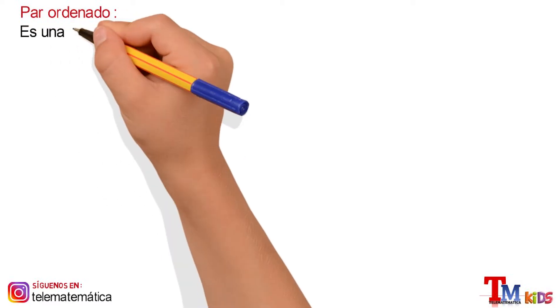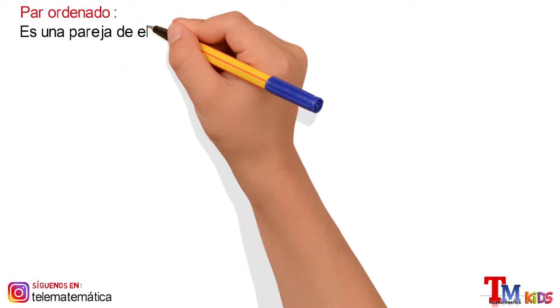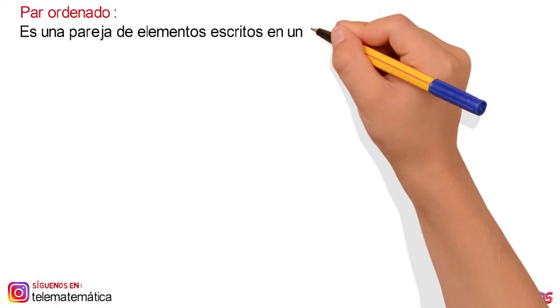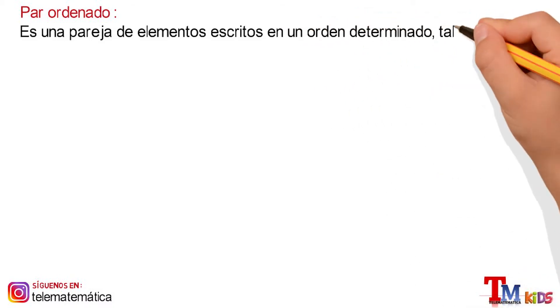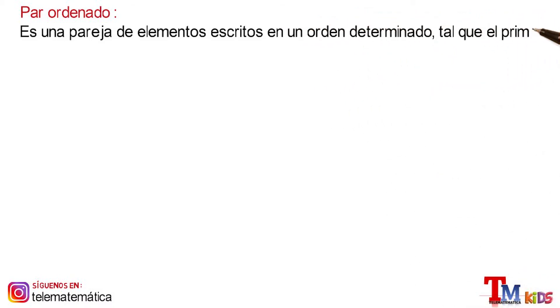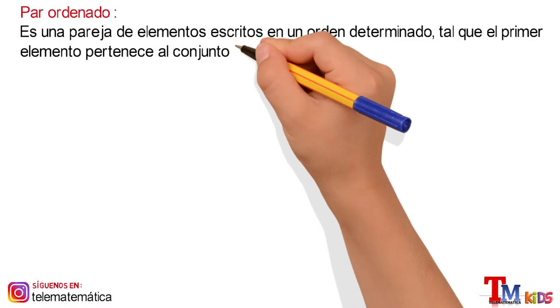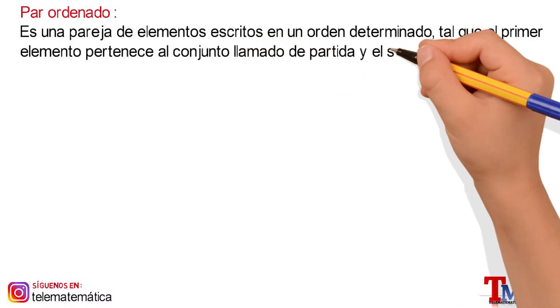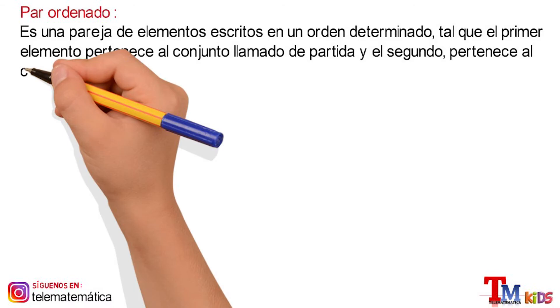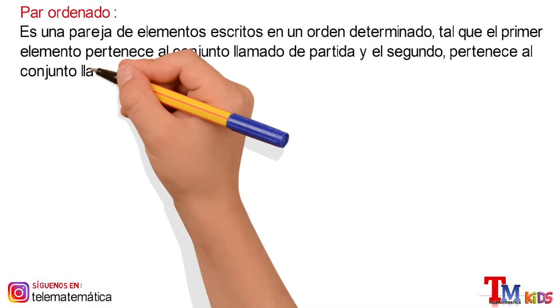Next, we will introduce the concept of an ordered pair, which is defined as a couple of elements written in a certain order, such that the first element belongs to the departure set and the second belongs to the arrival set.